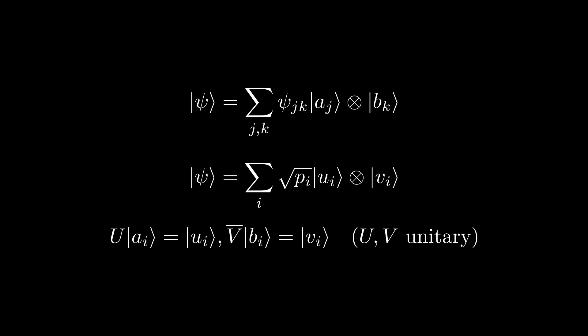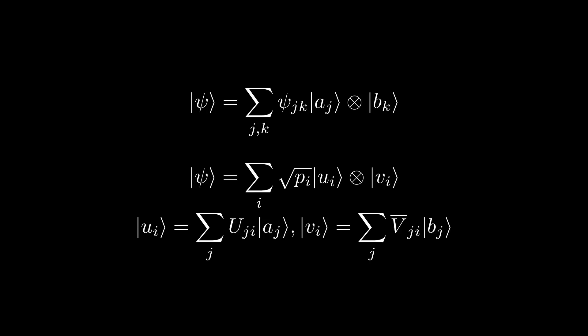You might think it weird that we use V bar to map BI to VI rather than just V, but there's actually a good reason for this, as we will see later on. Note also that the complex conjugate of any unitary matrix is also unitary, even without taking the transpose. So this is a completely fine assumption to make. If we think of U and V bar in the A and B bases respectively, we have that UI VI in the A and B bases simply correspond to the ith columns of U and V bar respectively. We can write this in ket notation as follows.